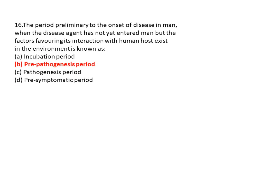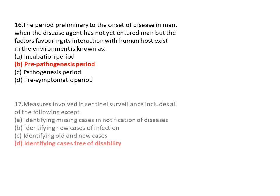Question 16: A period preliminary to the onset of disease in a man when the disease agent has not yet entered but factors favoring its interaction with the host exist in the environment is known as the pre-pathogenesis period. So option B is the correct answer.